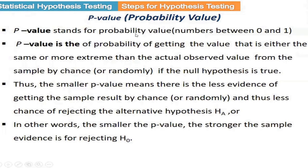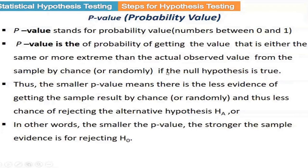P-value is nothing but the probability value. The probability normally ranges from 0 to 1, so p-value is a probability value. In statistics, our hypothesis test leads us to calculate some observed value of the test statistic. The p-value is the probability of getting that value of the test statistic, or a more extreme value, by chance or randomly — that is, getting the value mistakenly.